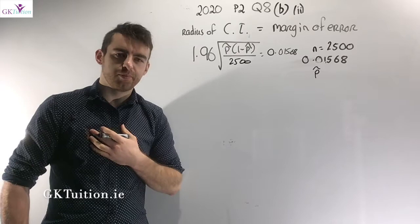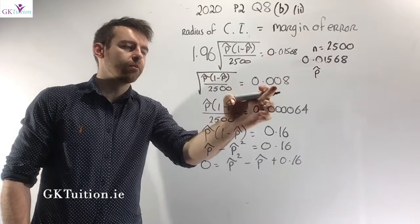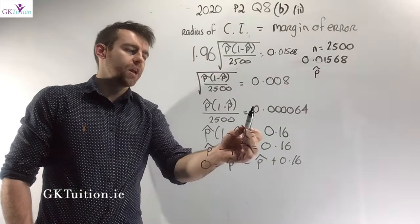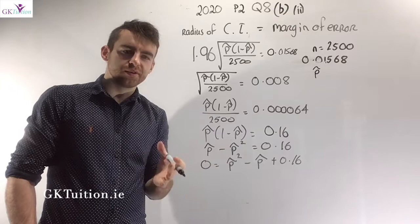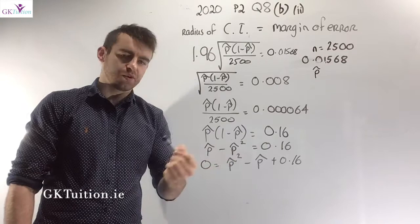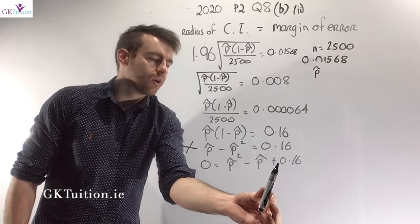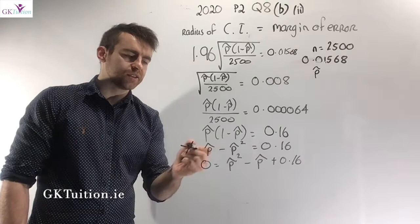Dividing both sides by 1.96: 0.01568 / 1.96 = 0.008. Squaring both sides to eliminate the square root: 0.008² = 0.000064. Multiplying both sides by 2500: 0.16 = p-hat × (1 − p-hat) = p-hat − p-hat². Moving everything to one side gives the quadratic: p-hat² − p-hat + 0.16 = 0.